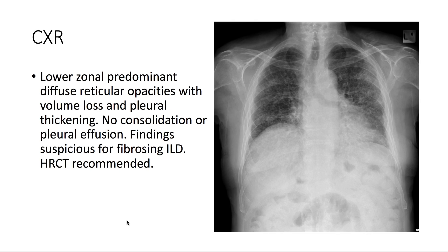Taking a look at the chest X-ray, we note that there are lower zonal predominant diffuse reticular opacities with volume loss and pleural thickening. No consolidation or pleural effusion. These findings are suspicious for fibrosing interstitial lung disease. High-resolution CT is recommended.